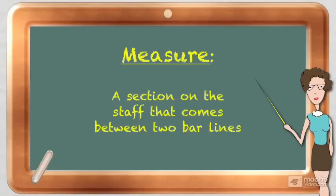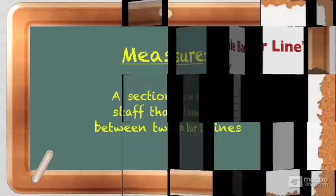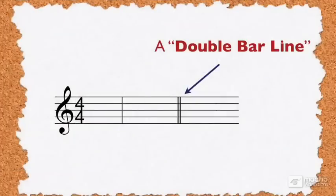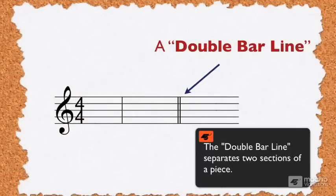You'll also find a few variations on the bar line concept being used in music notation. The double bar line is used to separate two sections of a piece. For example, you would see this between the verse and the chorus.